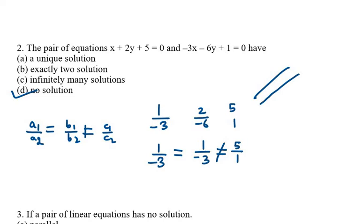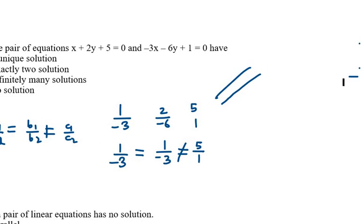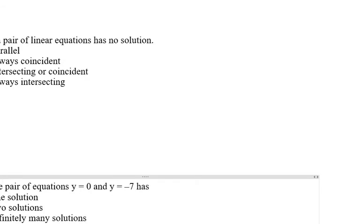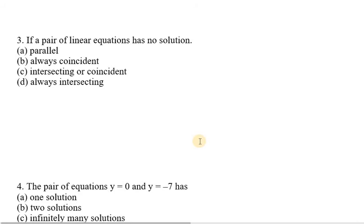Question number three: if a pair of linear equations has no solution, then the lines are — parallel, always coincident, intersecting, or always intersecting? As established, when a1/a2 = b1/b2 ≠ c1/c2, there is no solution and the lines are parallel. Therefore the correct option is A.